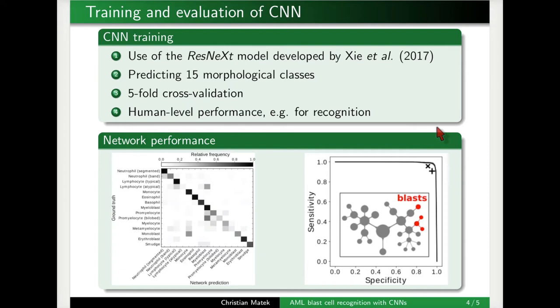As you can see, the performance of this neural network is pretty good. The confusion matrix shows a lot of very high diagonal elements.